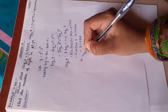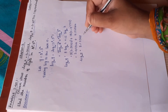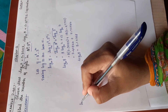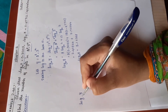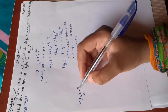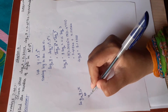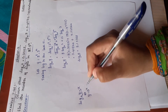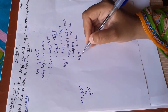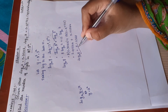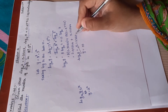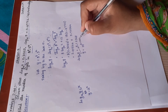So log of y to the base 10 equals 8.13368. We know that if log of y to the base a equals x, then y equals a to the power x. Applying the same rule here, we get y equals 10 to the power of 8.13368.